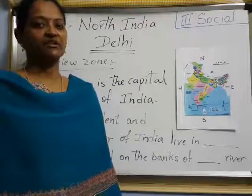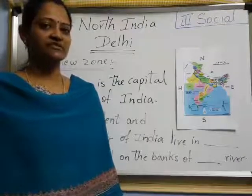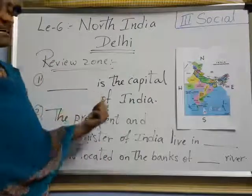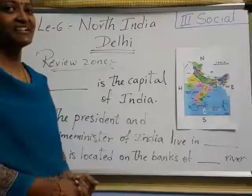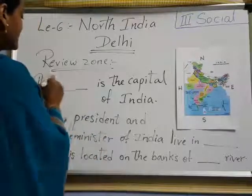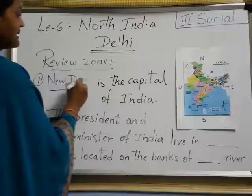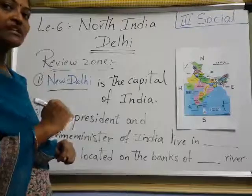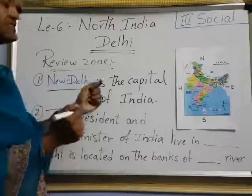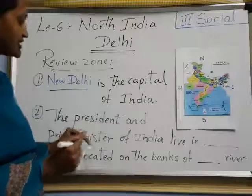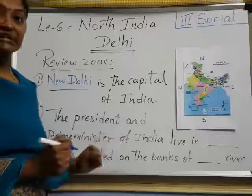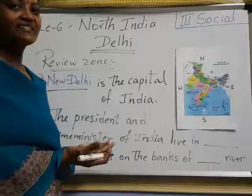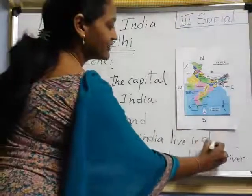Is it clear now? Now we will just revise today's class once — review zone. Tell me quickly all these bits. First one — Delhi is the capital of India. Which is the capital of India? Delhi — New Delhi. Delhi has two parts, right? One is Old Delhi, another one is New Delhi. New Delhi is the capital of India. Next — President and Prime Minister of India live where? They live in Delhi only.